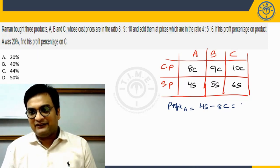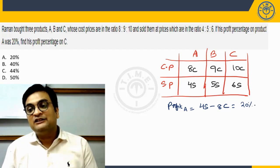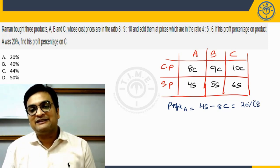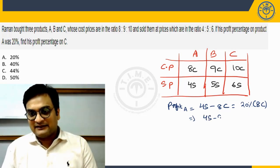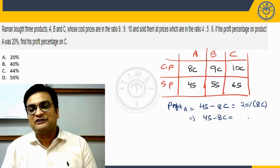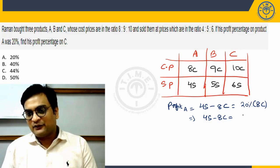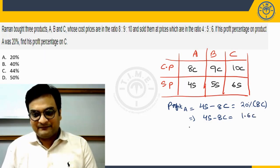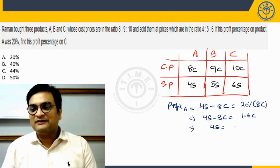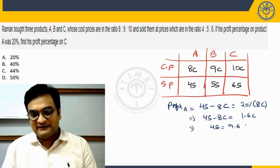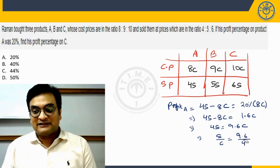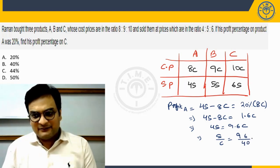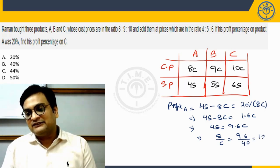Here the profit is 20 percent he says. 20 percent of what? 20 percent of cost price of A which is 8C. So we simplify 4S minus 8C is going to be 20 percent of 8 which is, 10 percent is 0.8, so 1.6C. So 4S will be equal to 8C plus 1.6C is 9.6C. So S upon C, the ratio of the variables we get it as 9.6 by 4 which is nothing but 96 by 40. When you simplify further, it's 12 by 5.